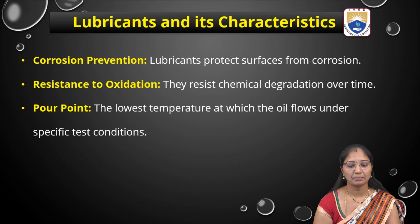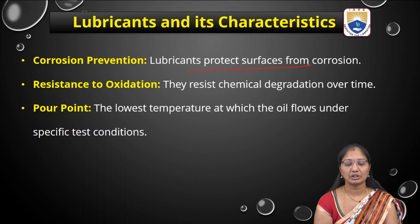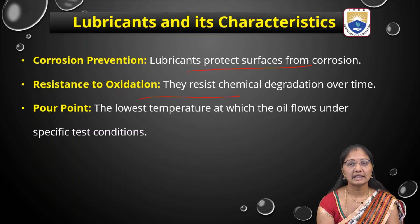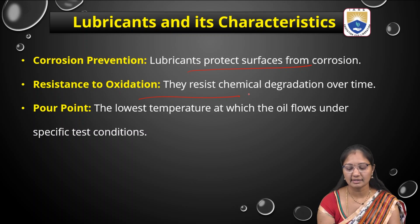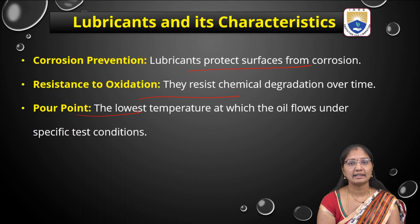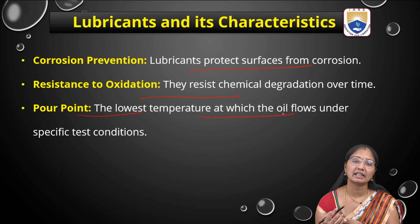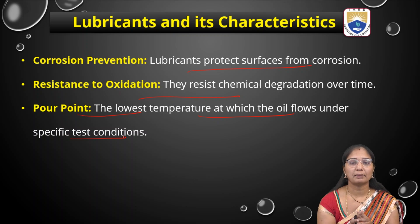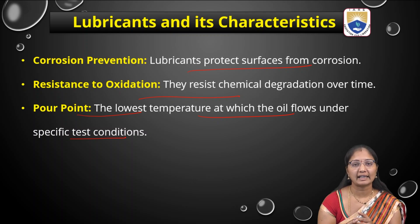Next is corrosion prevention — lubricants protect surfaces from corrosion, being organic substances. They should also be resistant to oxidation, meaning they should not react with oxygen. They resist chemical degradation over time with oxygen. The next property is the pour point — the lowest temperature at which the liquid flows is called the pour point. These characteristics should be present in a good lubricant.